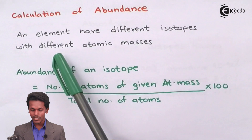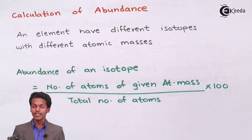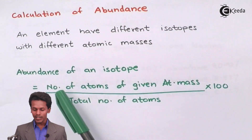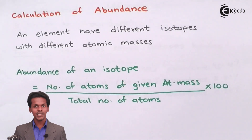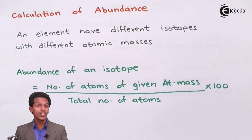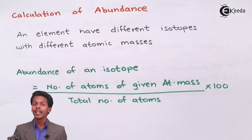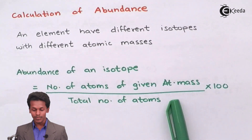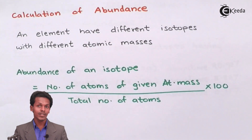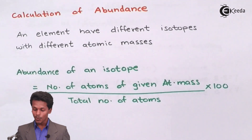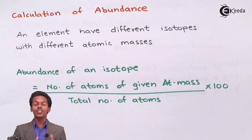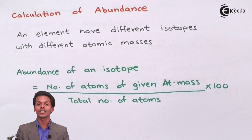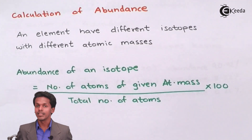The abundance of an isotope is calculated as the number of atoms of a given atomic mass — for example neon-20 — divided by the total number of atoms of all isotopes of that element (neon-20, neon-21, and neon-22 combined), multiplied by 100. By this calculation, we can determine which isotope is present in greater or lesser quantity in nature. That quantity is known as abundance.